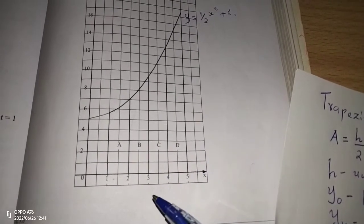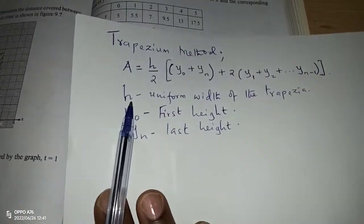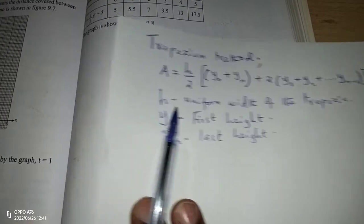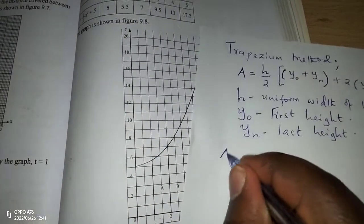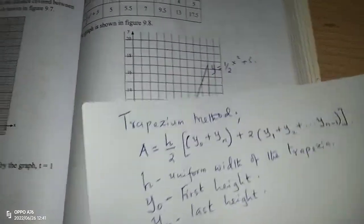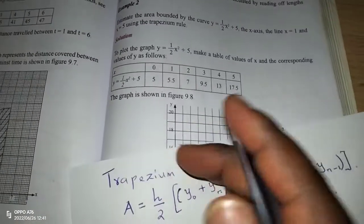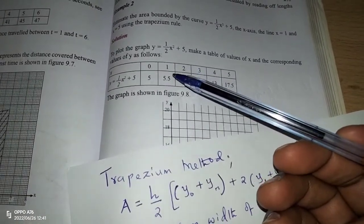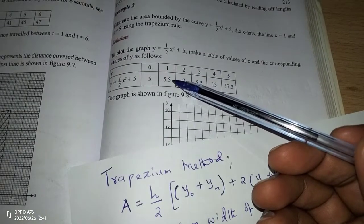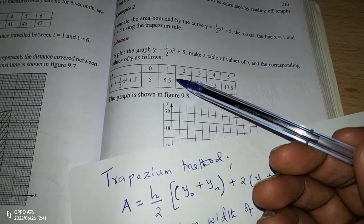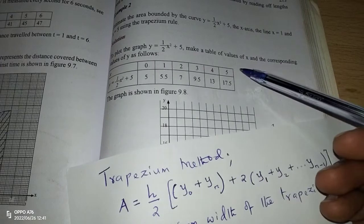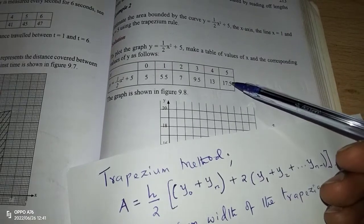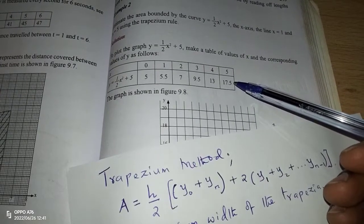Now to get the area of this region, it's good we apply the formula, which says that area is given by h over 2. So to calculate the area in this case, you can see that we have the first height when x is 1: 5.5. And the last height when x is 5: 17.5.